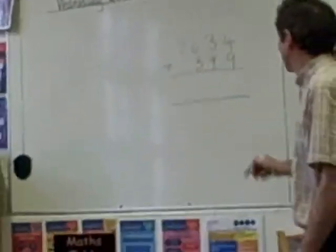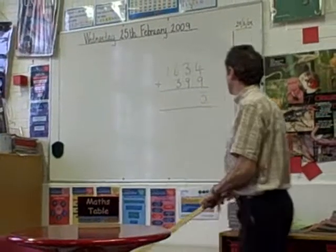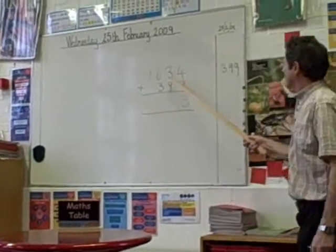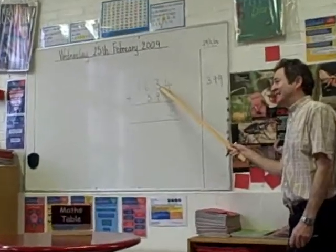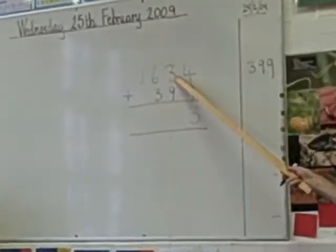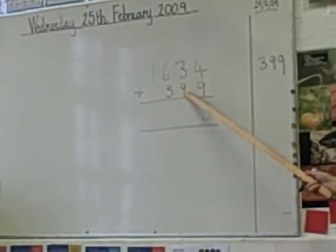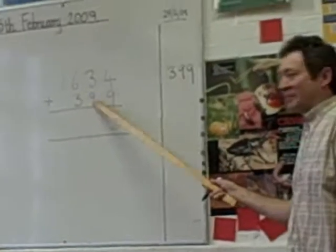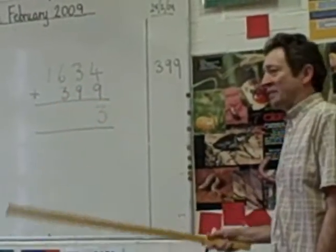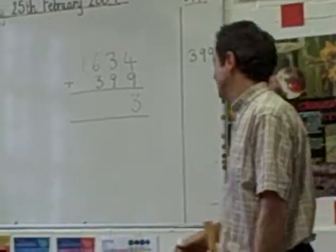Watch how we write it. What have we got here? 3T. 3T. And 9T is? 12T. And 1T. 12T.